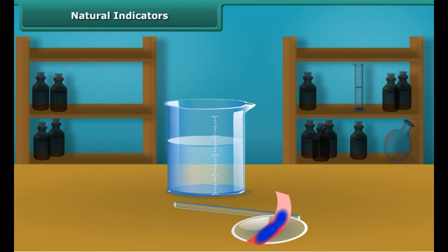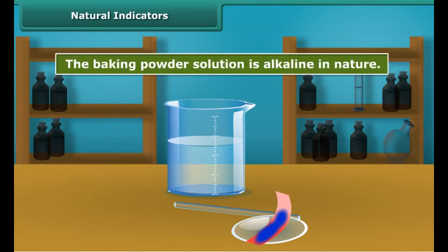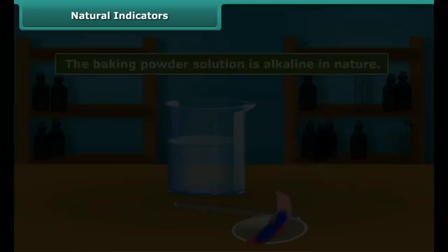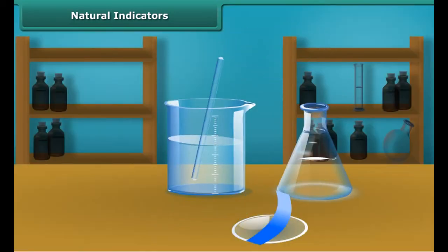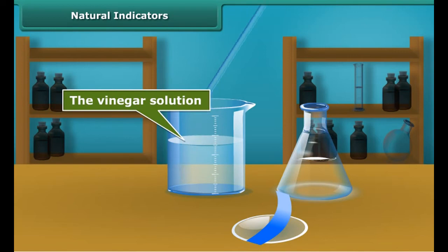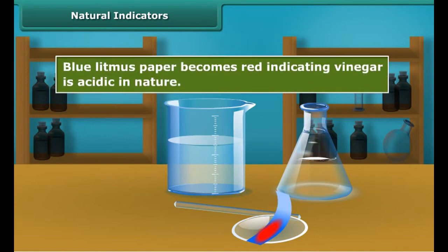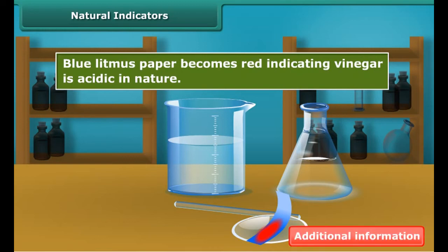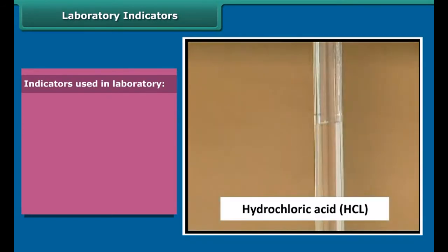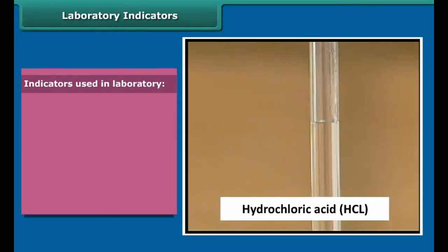Litmus is a natural indicator extracted from lichens. It has a purple color in distilled water and is available in the form of a solution or litmus papers. You can test the nature of a solution using litmus paper by dipping a clean stirring rod into the solution and touching it to the litmus paper.